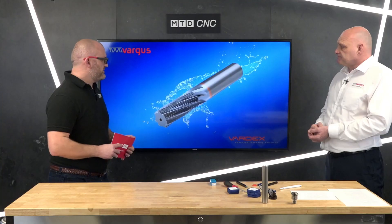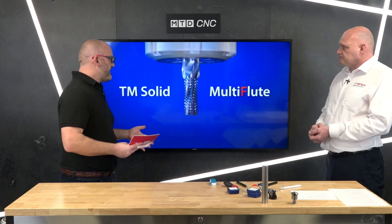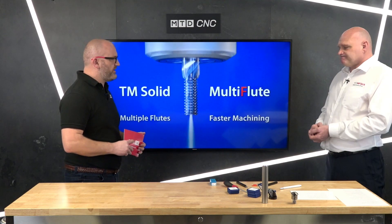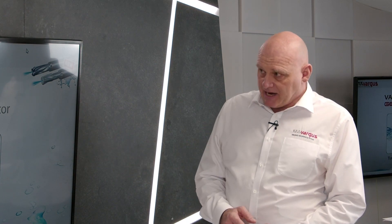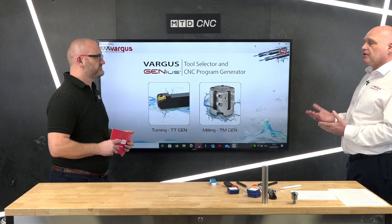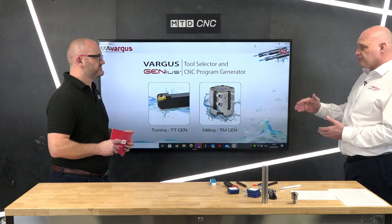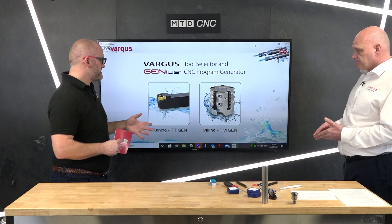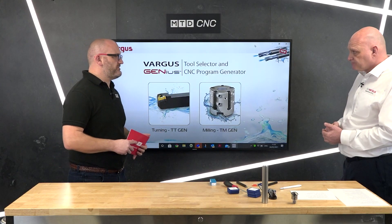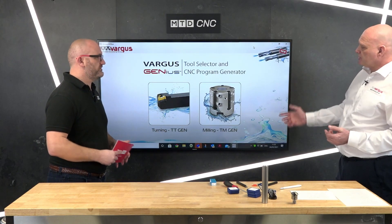The more challenging the materials, the bigger the advantages of these tools, because we're taking such a short depth of cut at a high feed rate — there's no radial push-off on the machine, therefore we've got a lot more control over the thread and a lot better control over the finish. The main barrier to entry is the programming, and that's something Vargas can help with. We have the Vargas Genius — it's not only a tool selector but it also gives us a CNC program as well, to help talk us all the way through the programming.